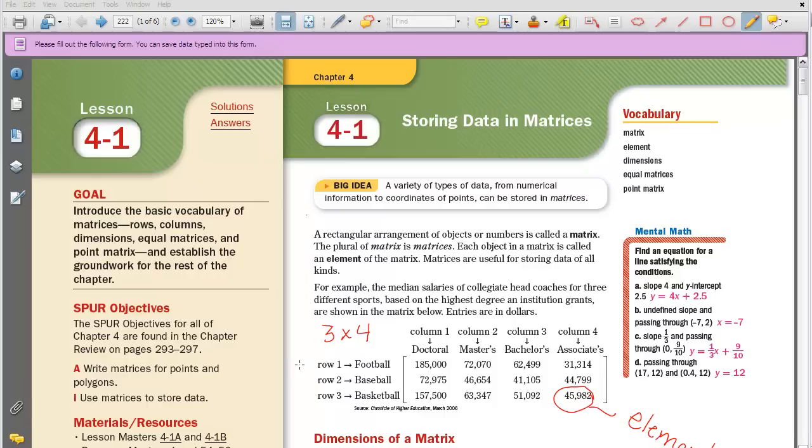So we have, across one row, all the football median salaries based on the level of degree that the person would hold. We have, in row two, baseball, and row three is basketball. So like I said, each individual dollar amount is called an element.